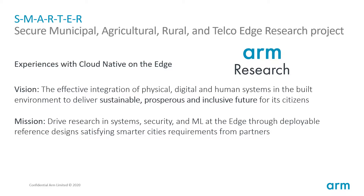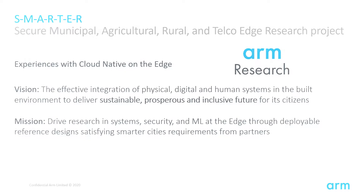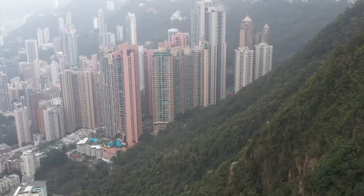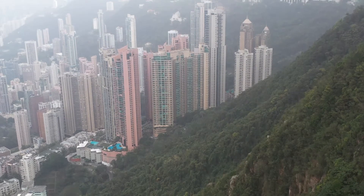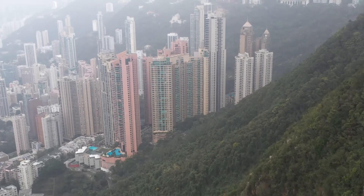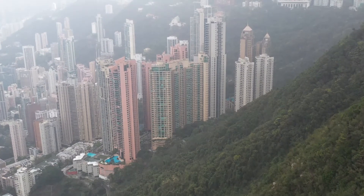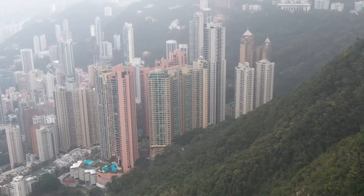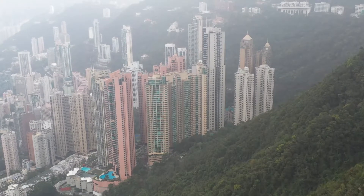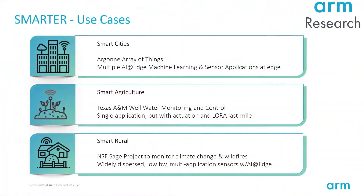The smart cities use case involves deploying various sensor arrays scattered across the entire city, measuring temperature, humidity, pollution, traffic patterns, and pedestrian traffic. This data serves in optimizing and improving traffic flows and pedestrian safety while controlling pollution. In addition, there are other use cases like smart agriculture, where water levels are closely monitored in wells and other bodies of water to utilize water resources efficiently.